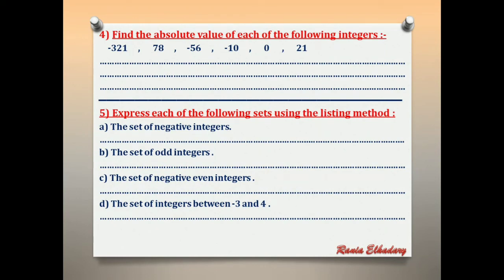Number 4: find the absolute value of each integer. Absolute of negative 321 = 321. Absolute of 78 = 78. Absolute of negative 56 = 56. Absolute of negative 10 = 10.